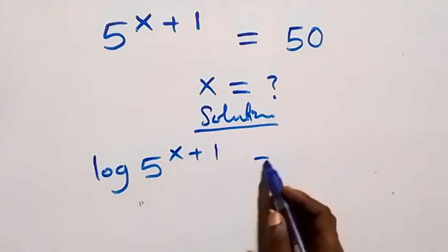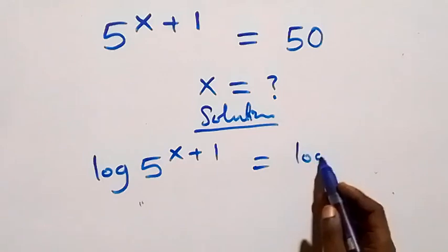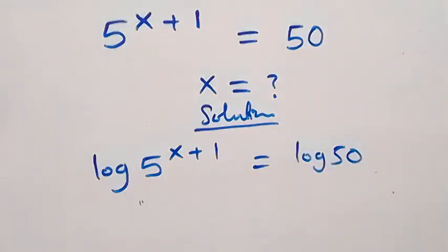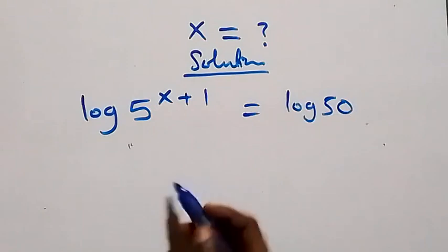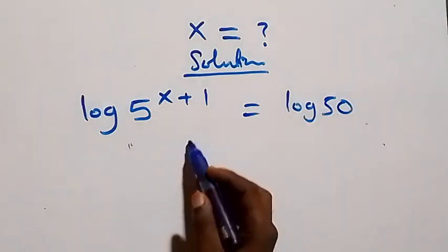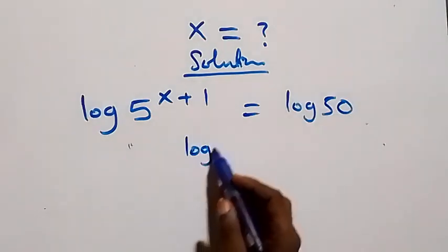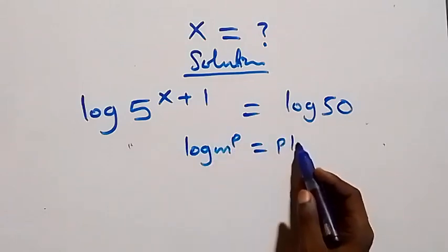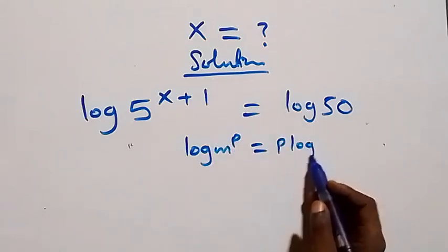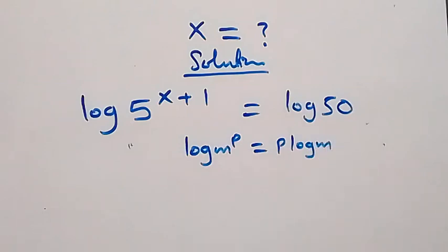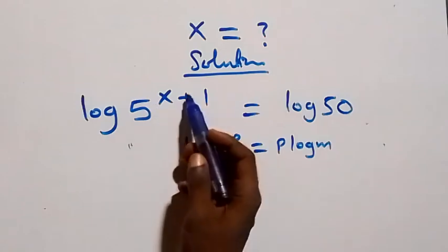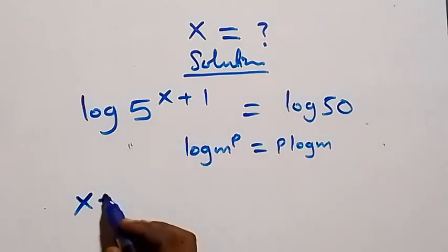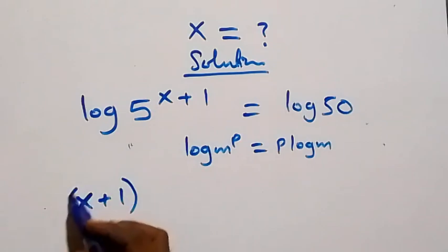Next step, we can apply the power law of logarithms. When we have log m raised to power p, this is the same thing as p times log m. Here the power is x plus one, so what we have becomes x plus one times log 5.